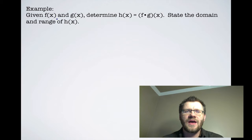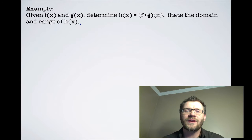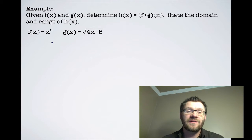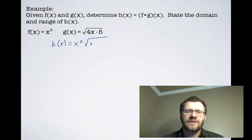Example: given f(x) and g(x), determine h(x) = (f·g)(x) and state its domain and range. Here f(x) = x² and g(x) = √(4x − 5). Finding (f·g)(x) is straightforward: h(x) = x² · √(4x − 5).